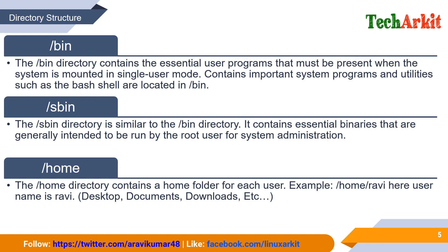The /sbin directory is similar to /bin but contains essential binaries generally intended to be run by the root user or system administrators. For example, the fdisk command — used to change partition sizes or create new partitions — can only be executed by root or sudo users. System administration commands are stored in /sbin. This separation exists so you can restrict regular users from accessing administration commands by setting appropriate permissions.